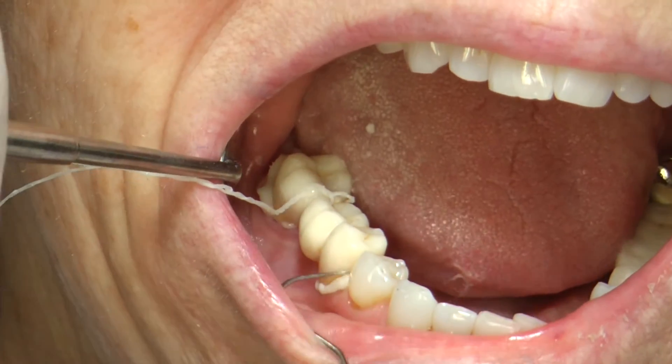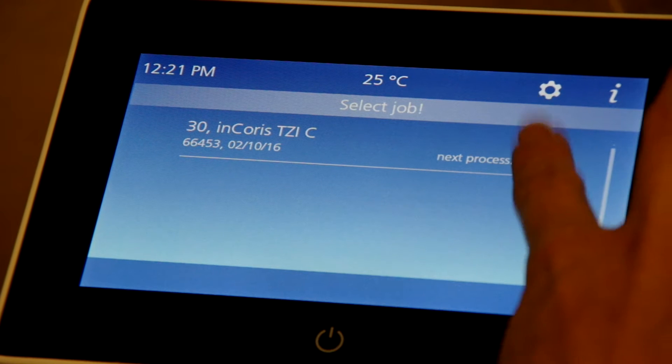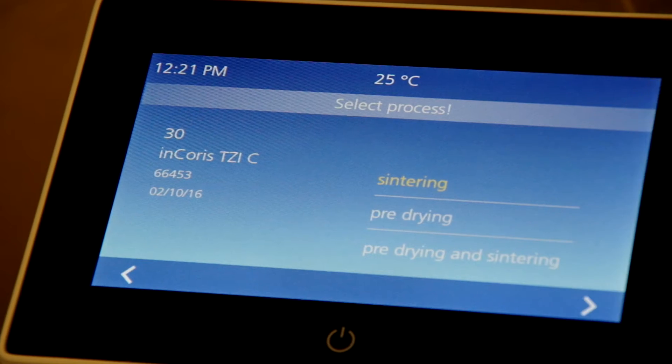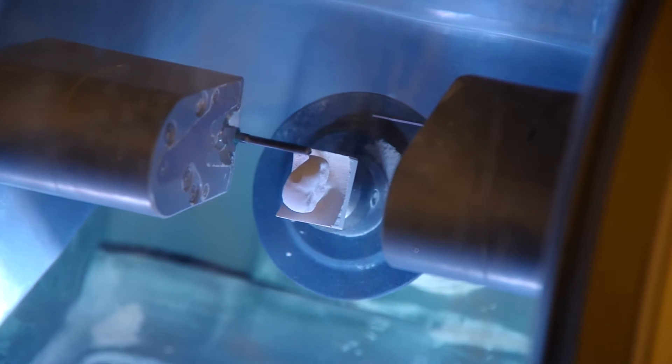What Sirona has been able to do is make it straightforward, make it simple. There's no guesswork. There's no thinking involved with this. In fact, the oven actually calculates the sintering time on the volume and size of what the restoration is. So every program is unique to that restoration. This is groundbreaking when it comes to clinical dentistry.